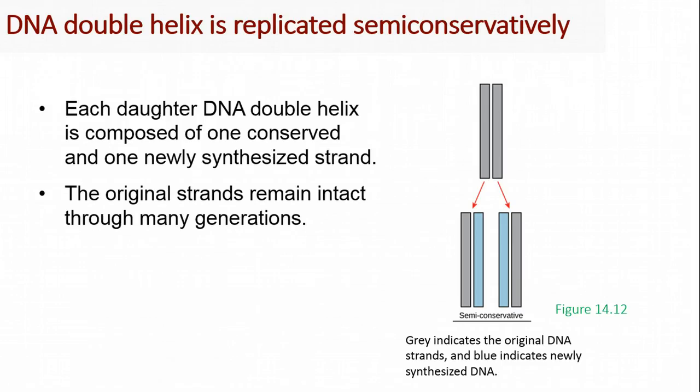This idea is called semi-conservative replication of DNA. Here in gray, you see an original DNA strand. That DNA is split open. So half of that DNA strand goes here and half goes here. And then the blue DNA strand is the newly synthesized strand. This is why we call it semi-conservative. Because each daughter DNA double helix is composed of one conserved strand and one newly synthesized strand. This means that the original strands remain intact for many generations.